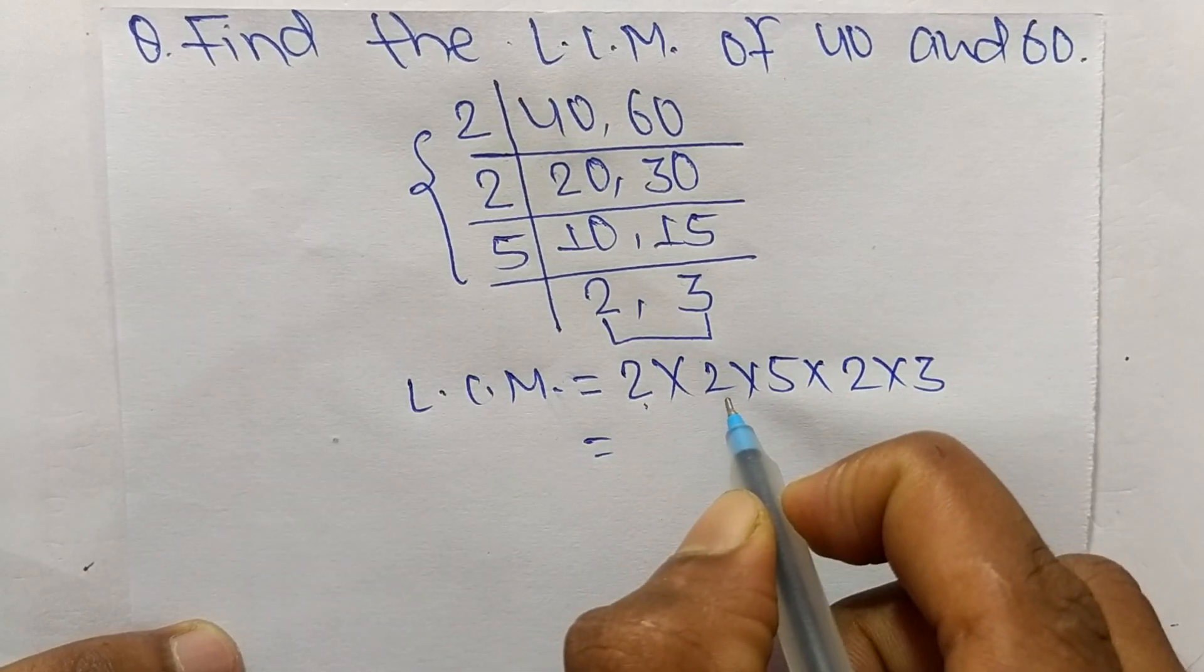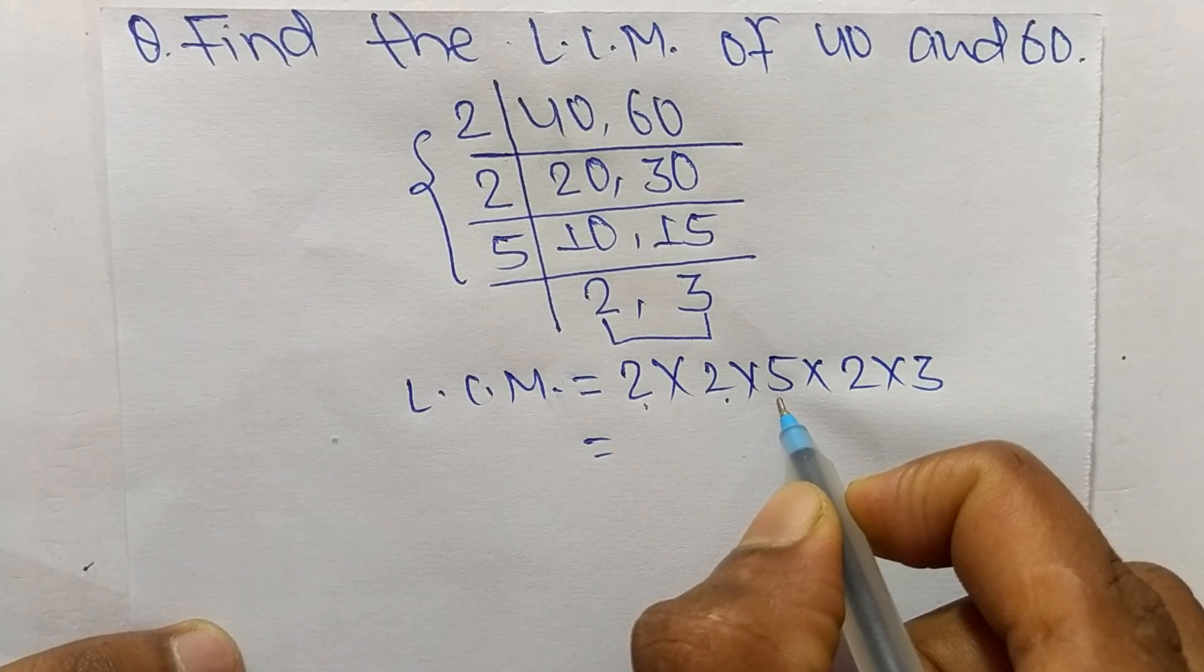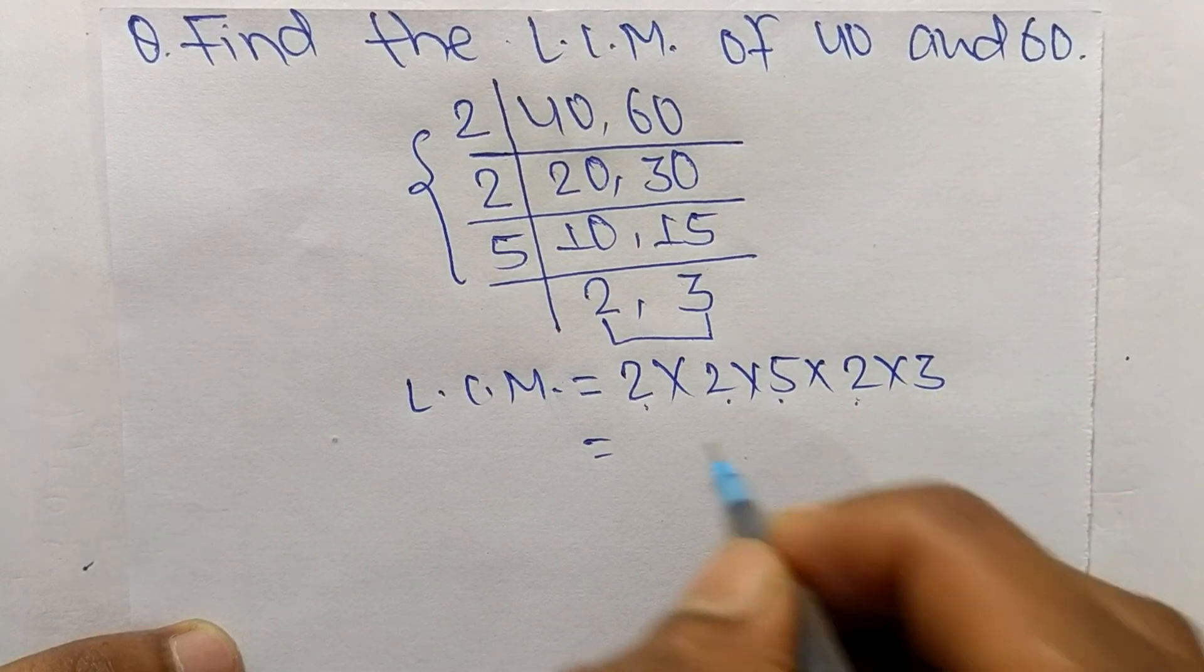2 times 2 means 4, 4 times 5 means 20, 20 times 2 means 40, 40 times 3 means 120.